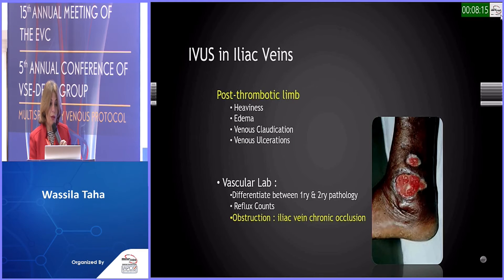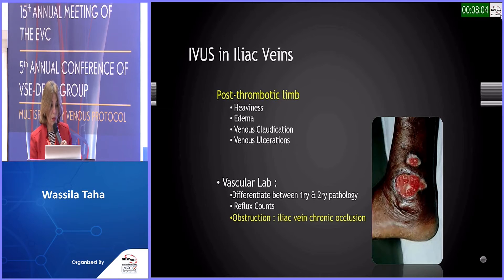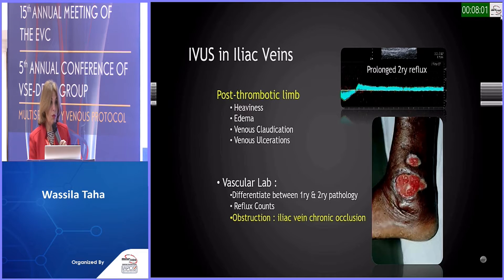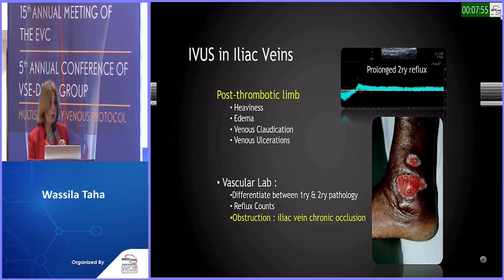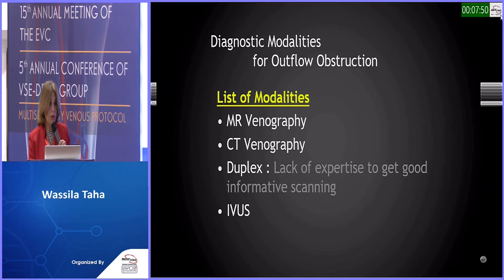Patients suffer from heaviness, eczema, venous claudication, and a good part of our patients suffer from venous ulcerations. Imaging plays a crucial role in differentiating primary from secondary pathology. Both reflux and proximal obstruction are important to detect. If you are operating a duplex ultrasound, you must look above the inguinal ligament and think obstruction. There is a long list of modalities: MR venography, CT venography, duplex, and of course our focus today — IVUS.